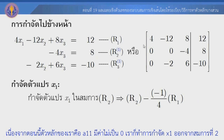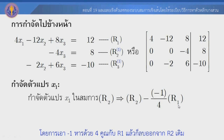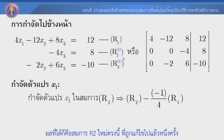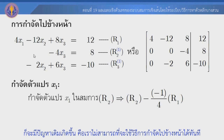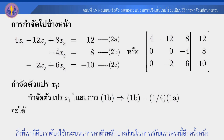จากตอนนี้ตัวหลักของเรา a11 ไม่เป็น 0 แล้ว เราทำการกำจัด x1 ออกจากสมการที่ 2 โดยการเอา row 1 หารด้วย 4 คูณกับ a1 แล้วก็ลบออกจาก a2 เดิม ผลที่ได้ก็คือสมการ a2 ใหม่ที่ถูกแก้ไขไปแล้ว 1 ครั้ง (Now the pivot a11 is not zero. We eliminate x1 from equation 2 by taking row 1 divided by 4, multiplied, then subtracted from the original row 2. The result is the updated equation row 2.)